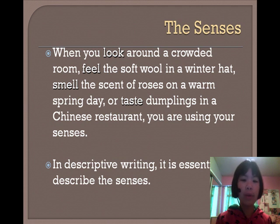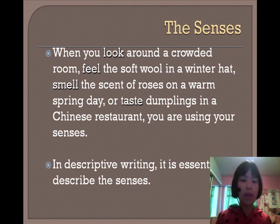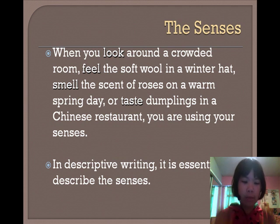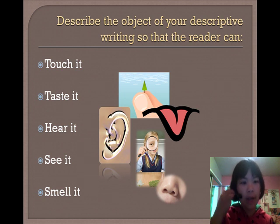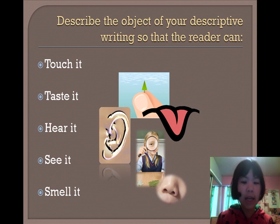The senses. When you look around a crowded room, feel the soft wool in a winter hat, smell the scent of roses on a warm spring day, or taste dumplings in a Chinese restaurant, you are using your senses. In Descriptive Writing, it is essential to describe the senses. You want to describe the object of your writing so that the reader can touch it, taste it, hear it, see it, and smell it.